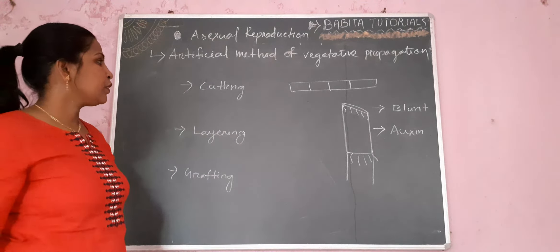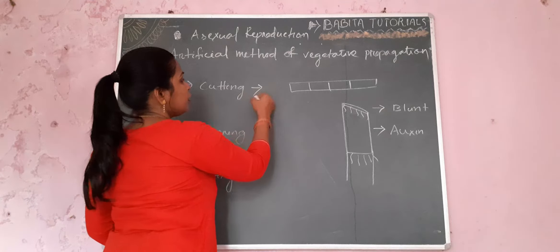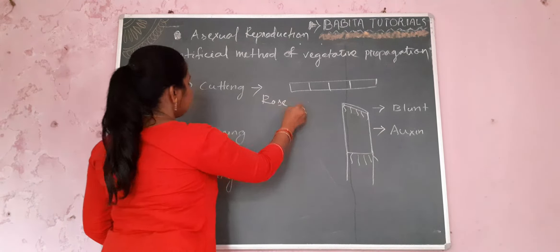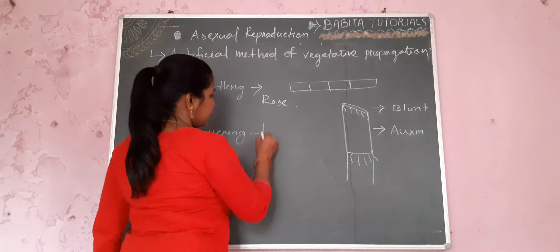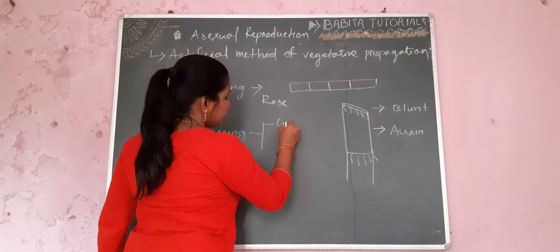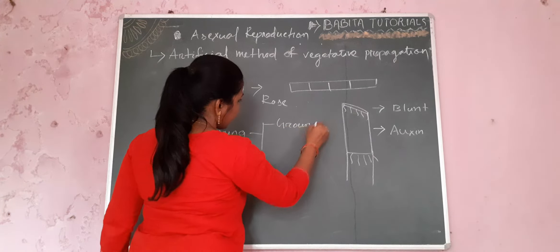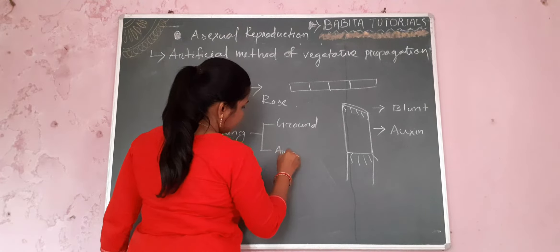Next will be layering. Cutting is used in the case of node transfer. There are two types of layering: one is ground layering and another is air layering.